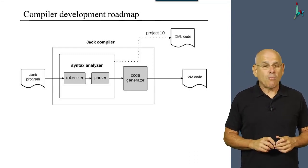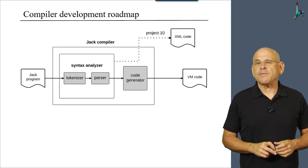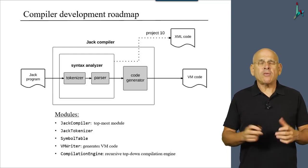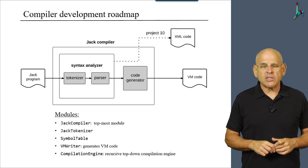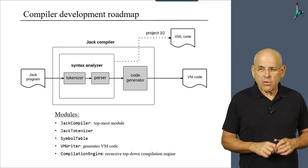This program will be our Jack compiler. And obviously, we'll do it one step at a time, as usual. Now, we propose to base the compiler's software architecture on five separate modules.